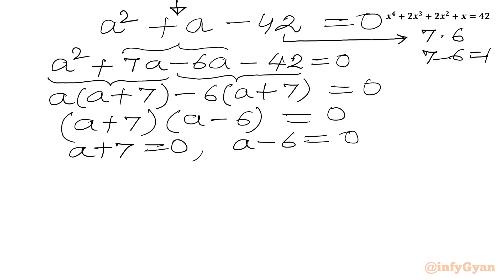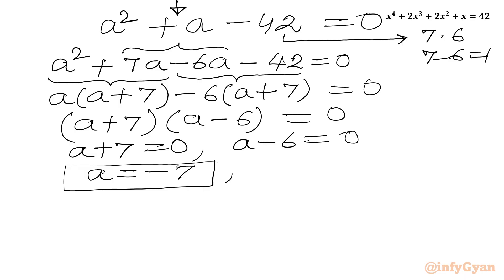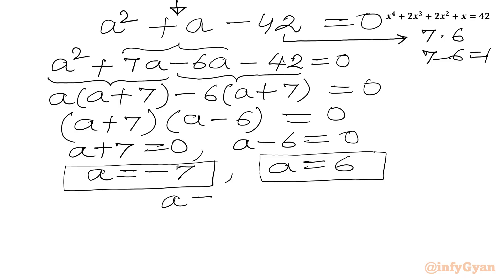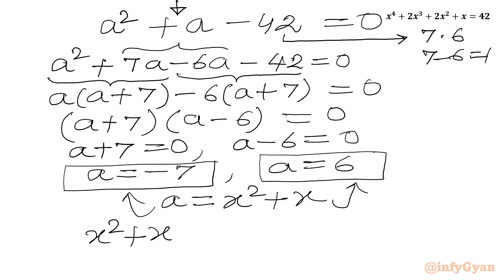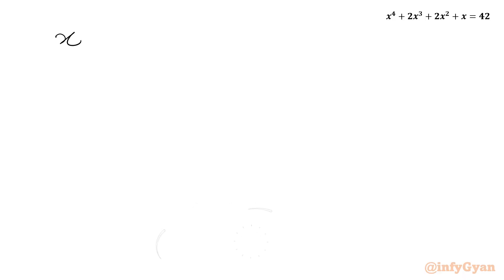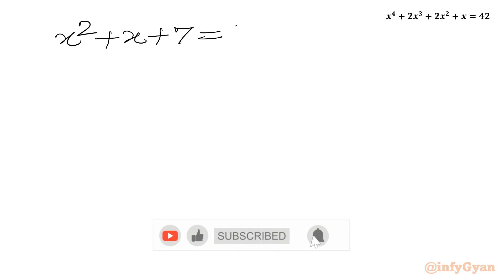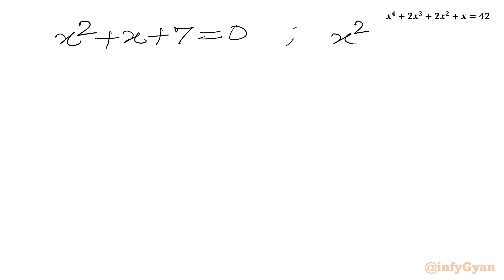Applying the zero product rule, either a+7 = 0 giving a = −7, or a−6 = 0 giving a = 6. Now substituting back x²+x for a, we get two quadratic equations: x²+x+7 = 0 and x²+x−6 = 0.